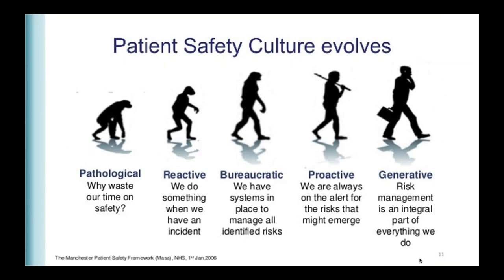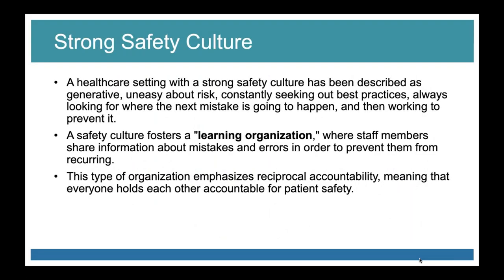Patient safety culture evolves through levels: pathological — why waste our time on safety; reactive — we do something when we have an incident; bureaucratic — we have systems in place to manage identified risks; proactive — we are always on the alert for risks that might emerge; and generative — risk management is an integral part of everything we do. A lot of infection prevention programs are in that reactive bubble, not by choice, but because of staffing constraints.